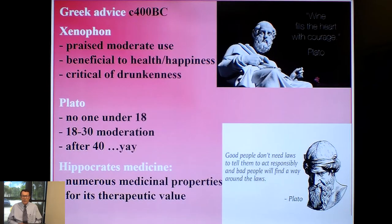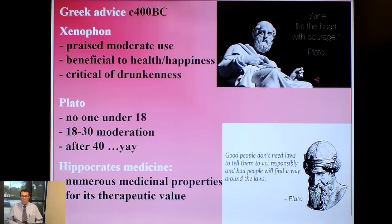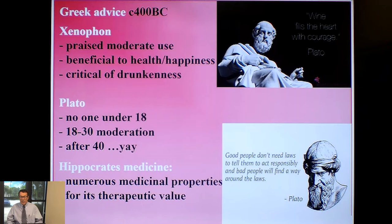Great philosophers railed against the excessive use of alcohol in Greece, but some said it could be fine in moderate use and beneficial in small quantities — just don't get drunk. Xenophon wrote extensively on alcohol, and Plato developed rules: no one under 18 should consume alcohol, between 18 and 30 consume it in moderation, and after 40 — who cares, since most people hardly made it past 40. Hippocrates, the father of Western medicine, showed how alcohol could be used medicinally in the West.